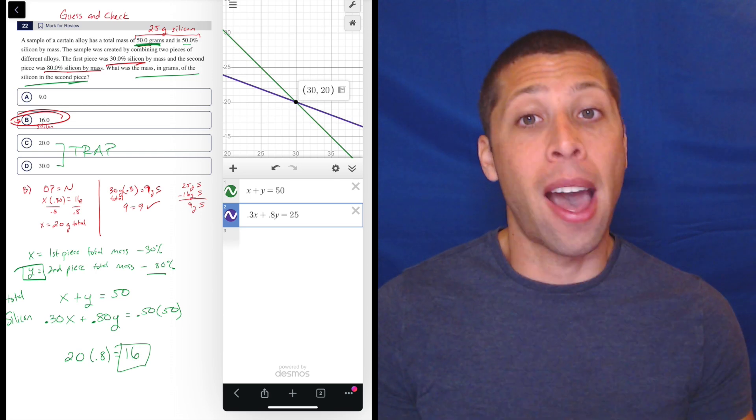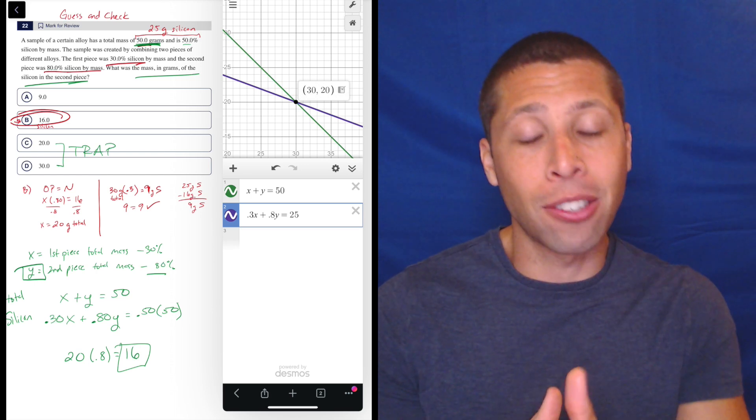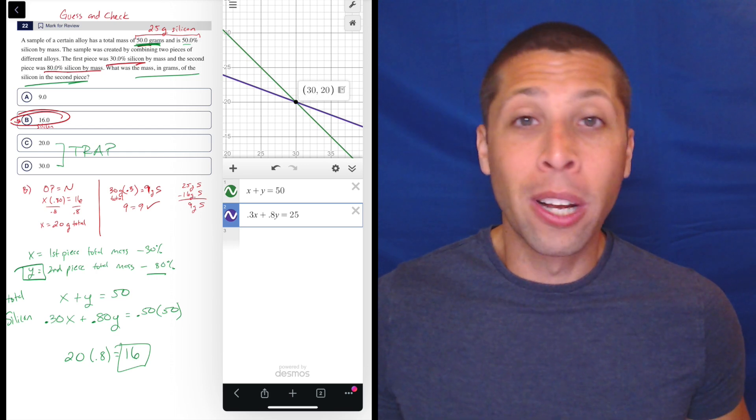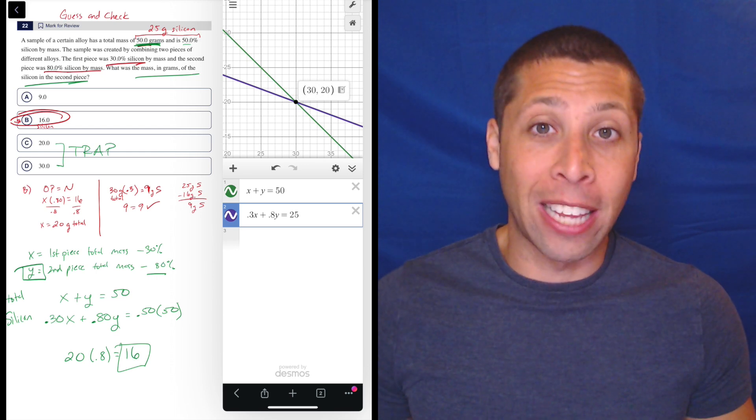At least in my mind, the guess and check gives us a path that if we don't see that algebra intuitively, we can still follow that guess and check path and get ourselves an answer because you're going to have the time to mess with this. So you don't want to just leave it blank because you just couldn't figure anything out.